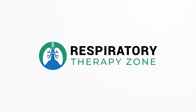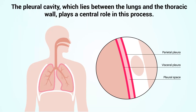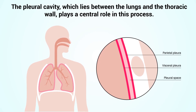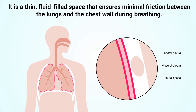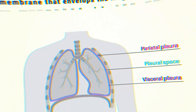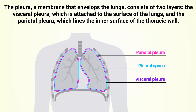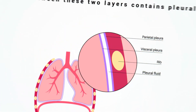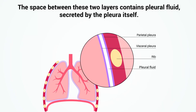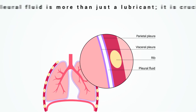The pleural cavity, which lies between the lungs and the thoracic wall, plays a central role in this process. It is a thin, fluid-filled space that ensures minimal friction between the lungs and the chest during breathing. The pleura, a membrane that envelops the lungs, consists of two layers: the visceral pleura, which is attached to the surface of the lungs, and the parietal pleura, which lines the inner surface of the thoracic wall. The space between these two layers contains pleural fluid secreted by the pleura itself.